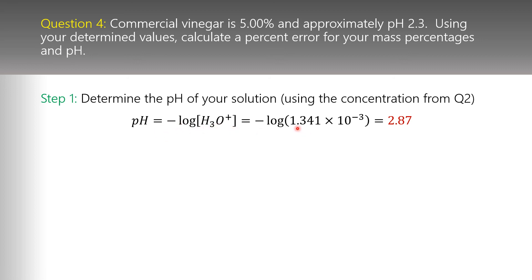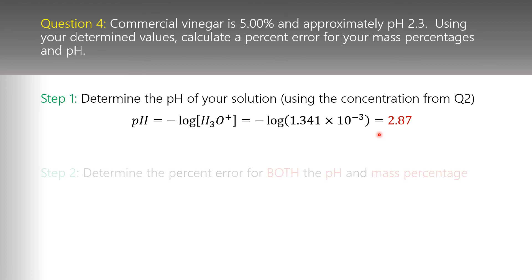Take the hydronium concentration from question two, take the log of it, then take the negative of that. You'll get negative 2.87, but taking the negative of a negative gives a positive, so the pH of our system is 2.87. That sets us up to calculate the percent errors for both measurements.